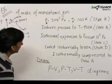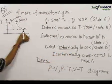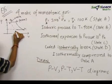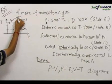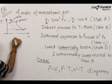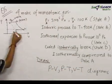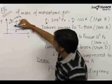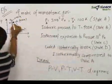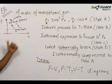Now from C it is cooled isobarically to 100 Kelvin. Since it is isobaric and the temperature decreases, we come down from C to D reaching 100 Kelvin again. This means D lies on the same isotherm as point A. Then from D it is isothermally compressed back to state A along that isotherm. So the total PV process goes A → B → C → D → A, and that is what the PV diagram looks like.